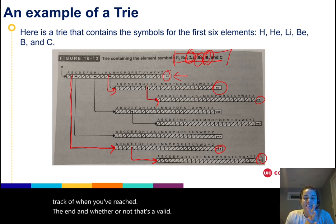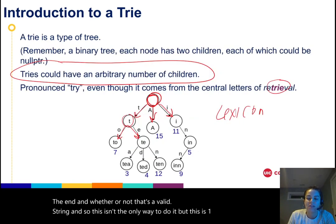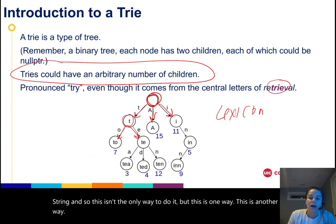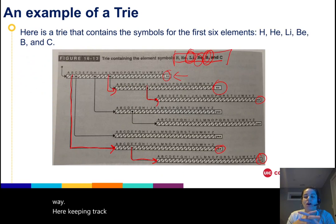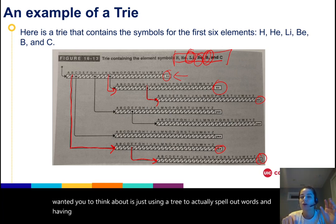This isn't the only way to do it, but this is one way. There's another way here keeping track of counts and numbers and whatnot. But the basic idea that I wanted you to think about is just using a tree to actually spell out words and having the letters be each node of the word, rather than using a tree to store the words themselves.